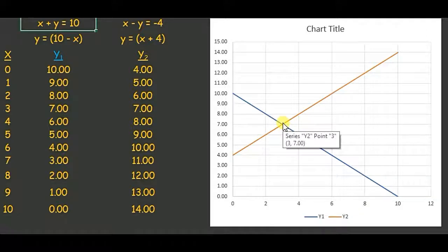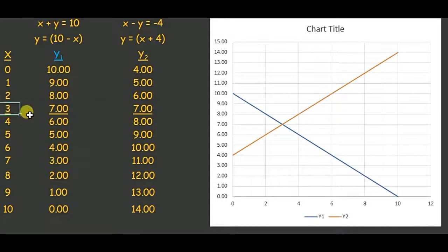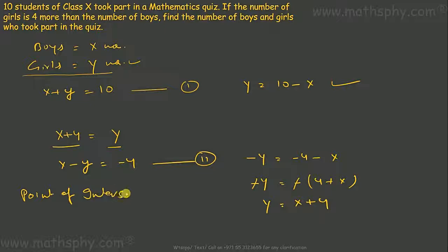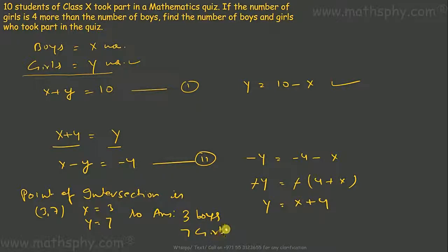It means 3 and 7 is the answer for this question. From the table also you can find this value — when x is 3, y1 is 7 and y2 is also 7. So x equals 3 gives y1 as 7 and y2 as 7, meaning the point of intersection in this graph is (3, 7). So x equals 3 and y equals 7. We took x for boys and y for girls, so the answer is 3 boys and 7 girls, found through graphical representation.